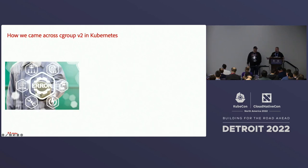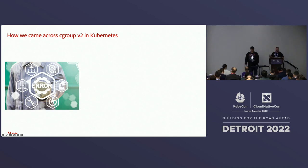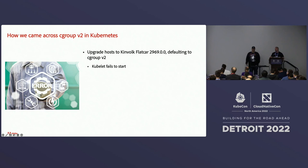So here's what happened. About almost a year ago we were going through just a normal upgrade of our clusters — upgrading the underlying operating system. We use Kinvolk Flatcar. We upgraded to version 2969.0.0 and this particular version had a new note in the release notes: 'Now we're defaulting to cgroupv2.' That sounds great — two is greater than one, I love new software, let's enable it. So we went ahead and went with it. And the first thing we found out was our cluster doesn't work.